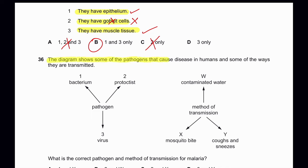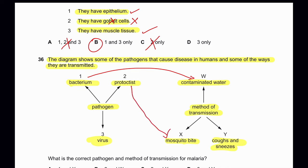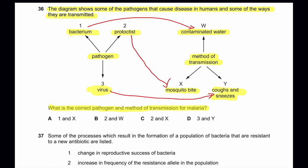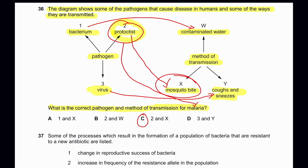Question 36: The diagram shows pathogens causing disease and their methods of transmission. Pathogens include bacterium, protoctist, and virus. Transmission methods include contaminated water, mosquito bite, and coughs and sneezes. Bacteria can be transferred by contaminated water, protoctists by mosquito bites, and viruses by coughs and sneezes. For malaria: it is caused by a protoctist and is spread by mosquito bites. So option 2 and X (protoctist, mosquito bite) is the correct combination. Answer: 36C.